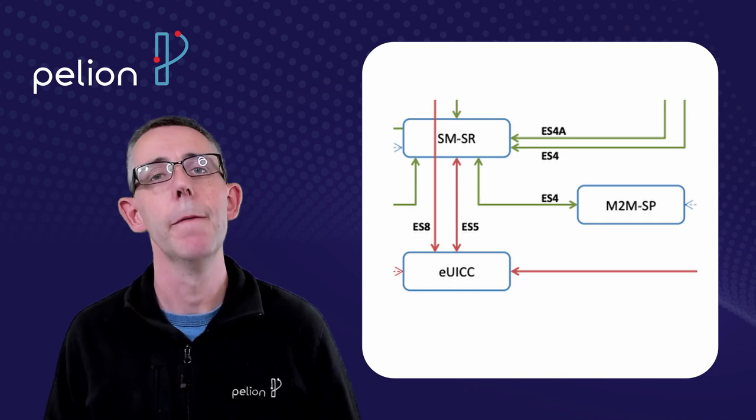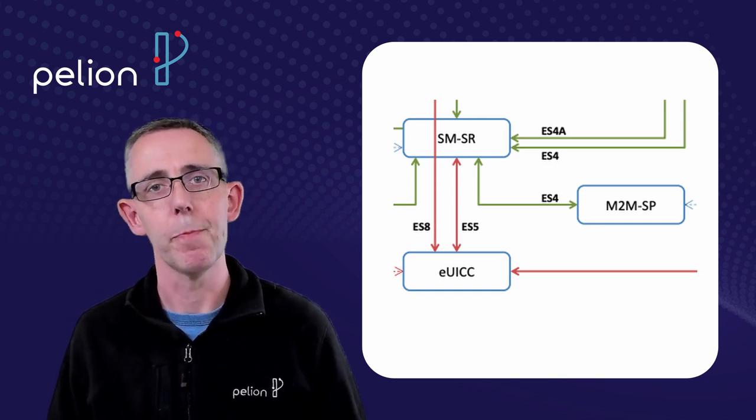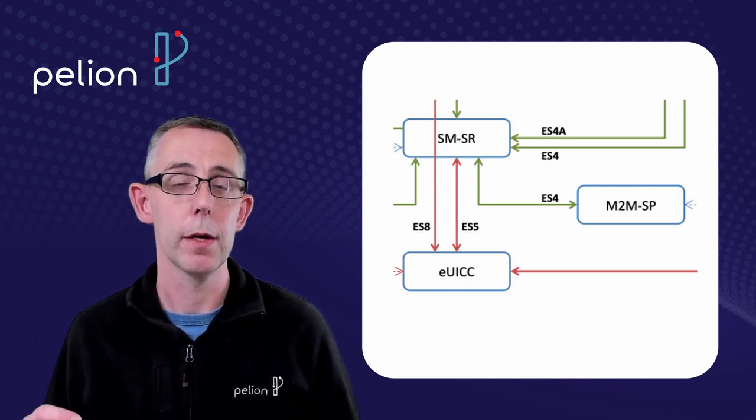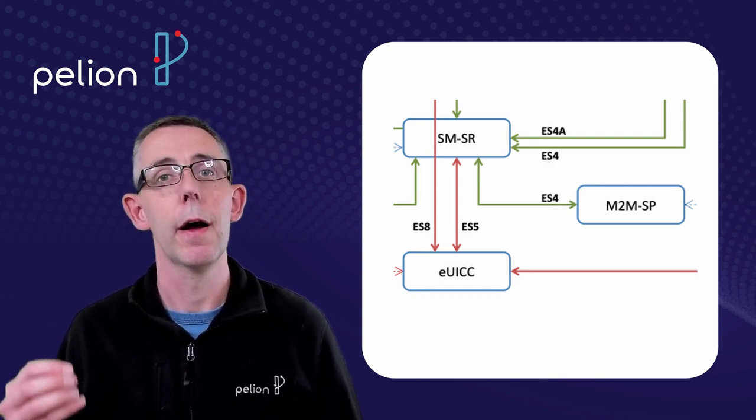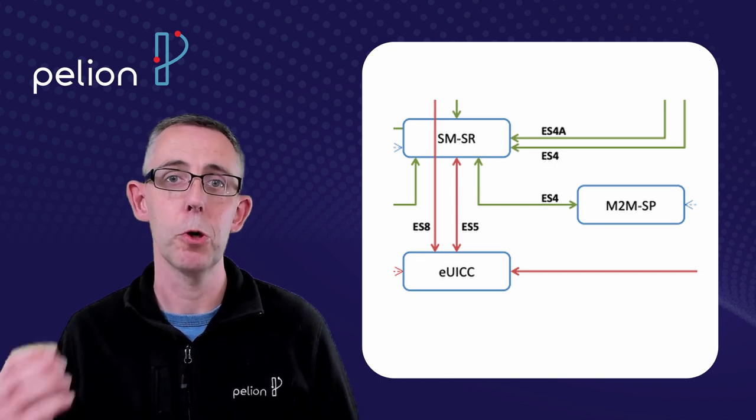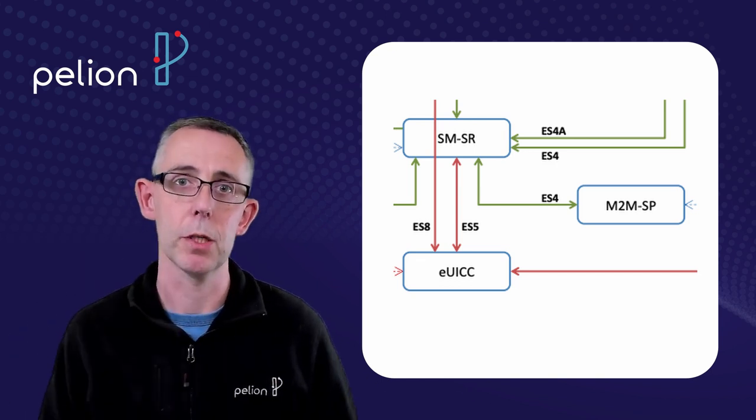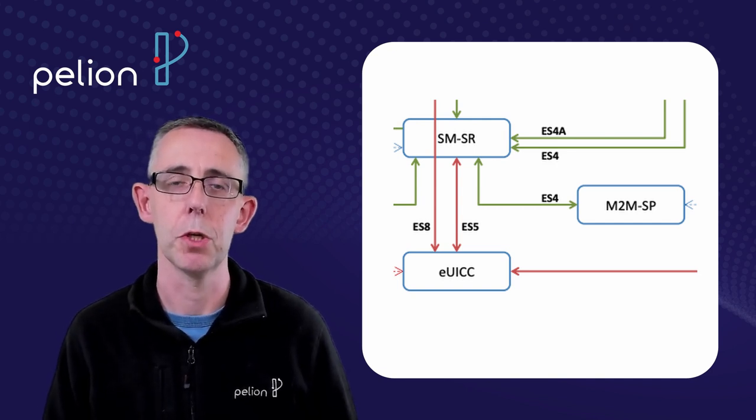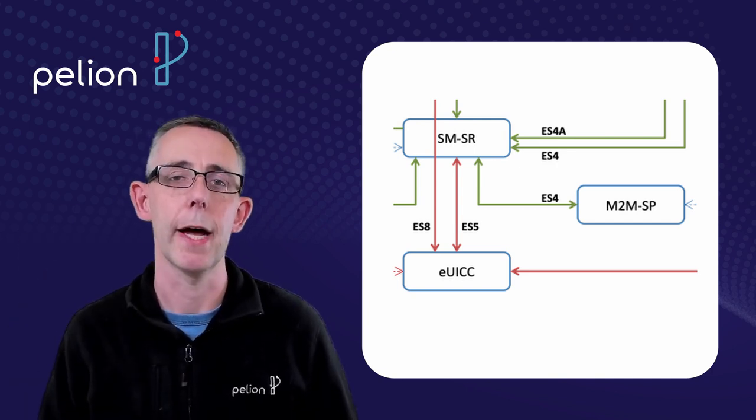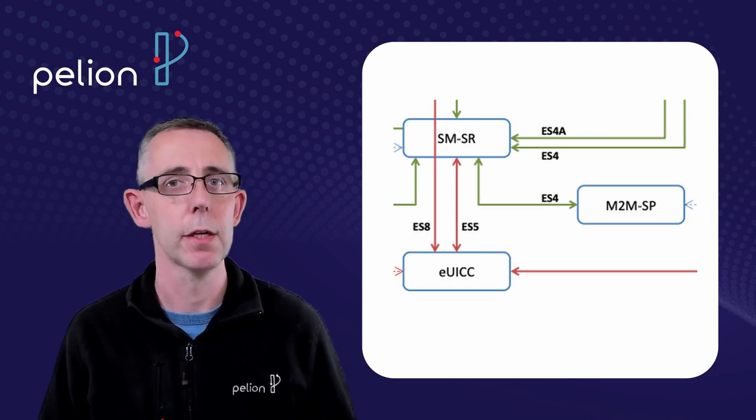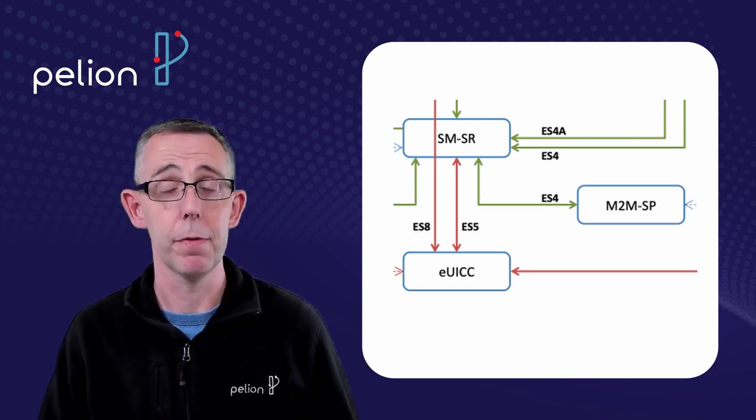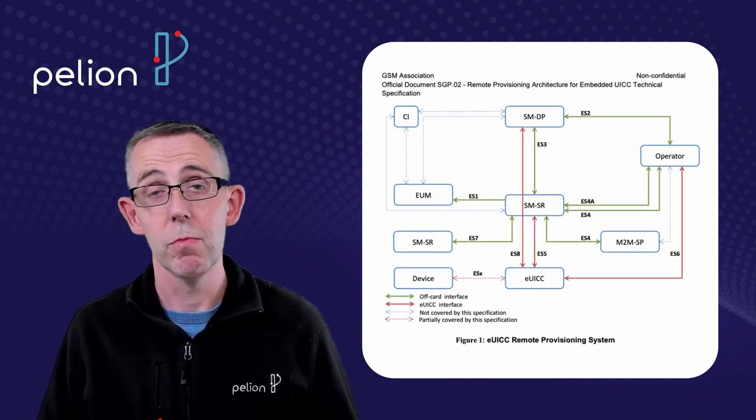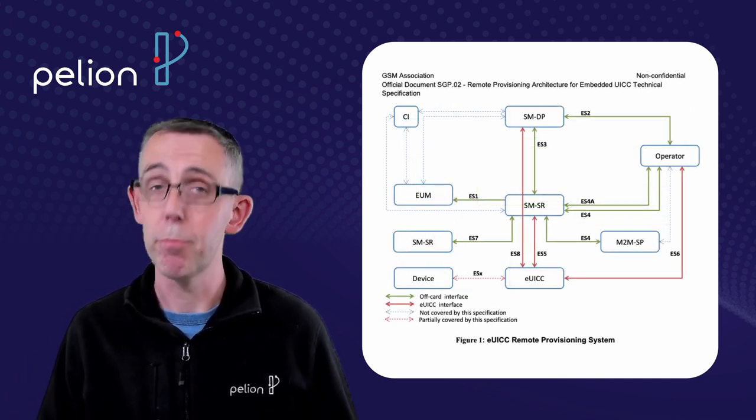And so you can always work with your service provider to take on board a new network operator who is able to push profiles into the subscription manager data preparation unit and then the vendor can use the subscription manager secure routing block to download that to your EUICC device, do a tariff switch, a profile switch and there you are you're online again.